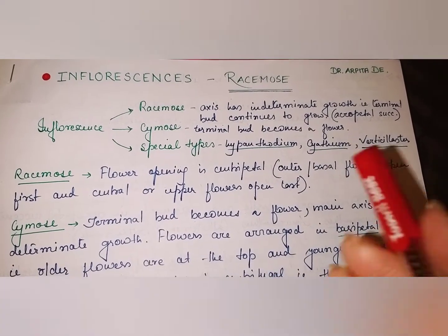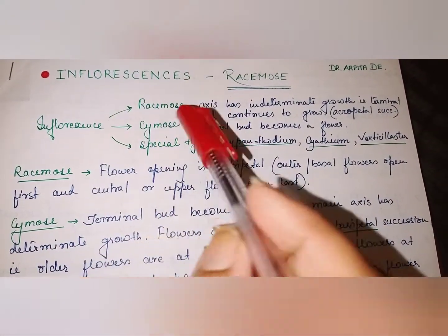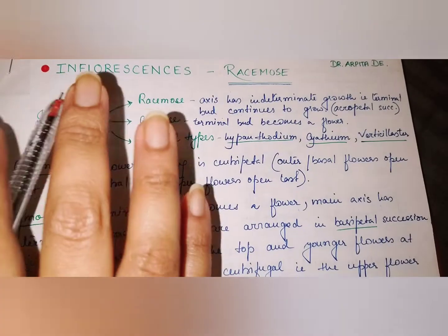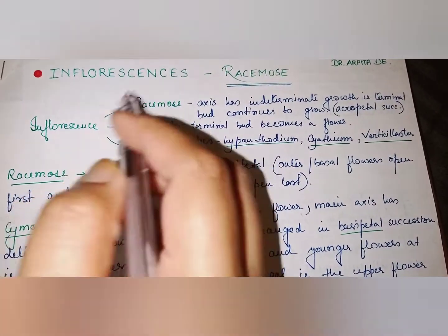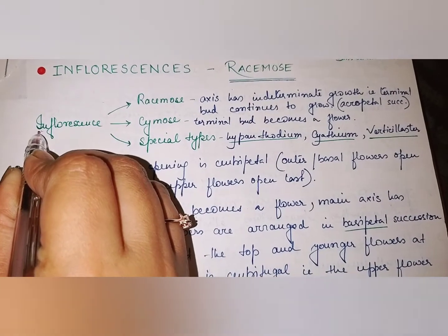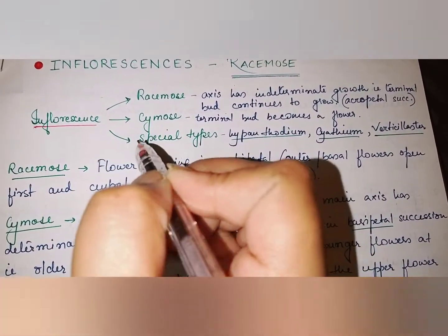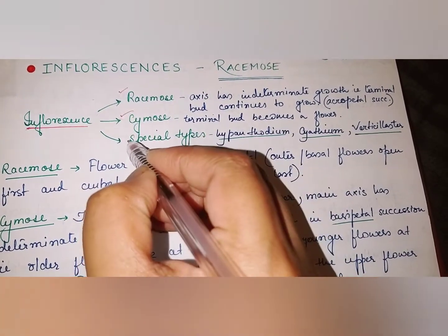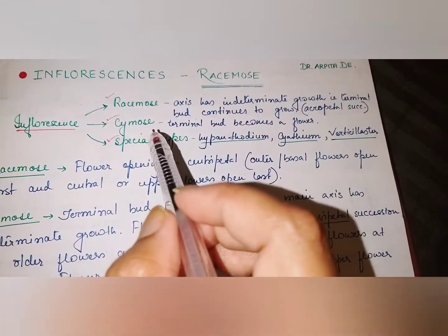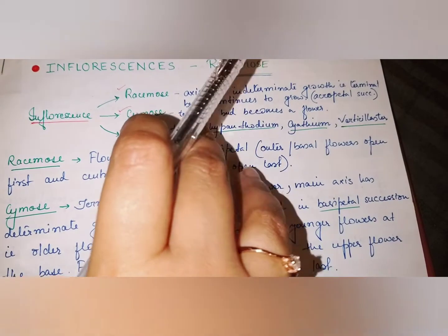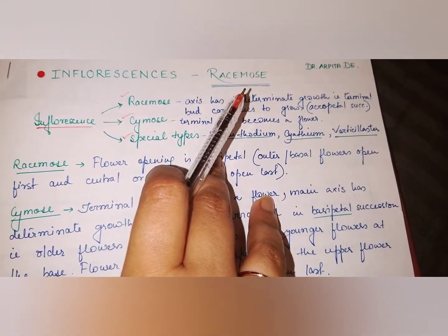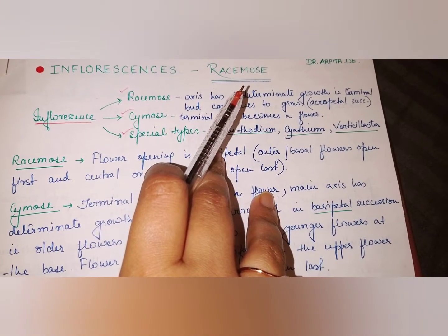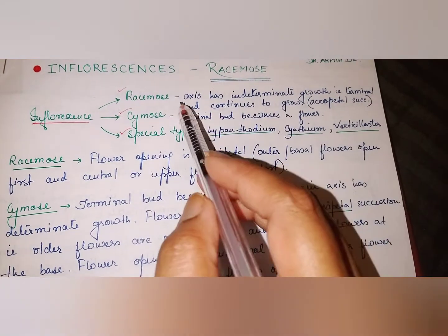Hello students, welcome back. Today we will talk about inflorescence. Our today's topic is inflorescence. Inflorescence is mainly of three types: racimose, cymose, and special types of inflorescence. This is a very quick revision — please pay full attention and try to remember the examples along with the terms.